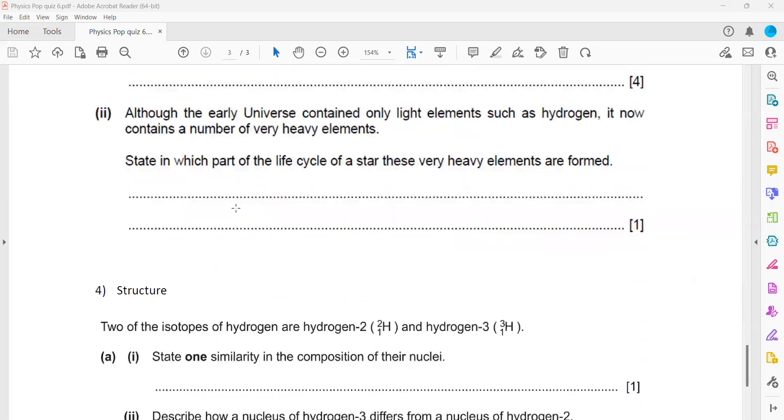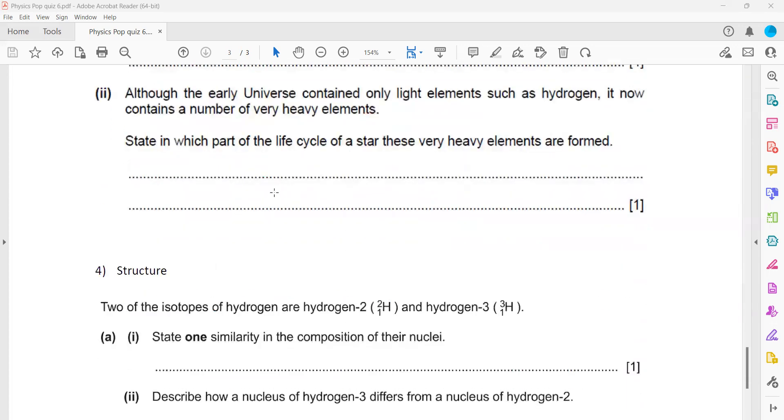Although the early universe contained only light elements such as hydrogen, it does now contain a number of heavy elements. In which part of the life cycle of a star are these very heavy elements formed? Heavy elements are formed in supernova, because what actually happens in a supernova - first there is hydrogen fusion, then helium fusion, and then when the heavy elements fuse together, that is when the supernova occurs. Which part of the star cycle forms heavy elements? That is in supernova.